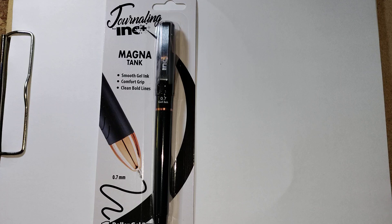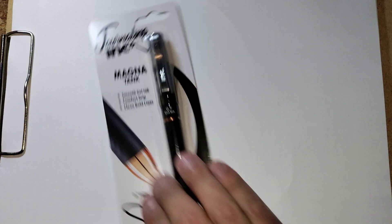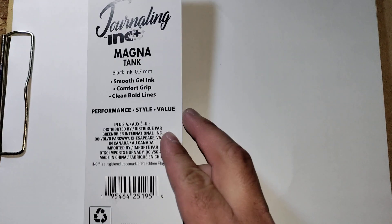Smooth gel ink, comfort gripped, clean bold lines, 0.7mm, one roller gel pen inside the package, black ink, and I'm pretty sure they'll come out with other ink colors soon enough. This is the one I found at the Dollar Tree though.